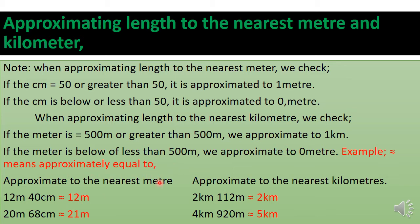Example — approximate to the nearest meter: 12 meters 40 centimeters. Is 40 centimeters up to 50? No, so it's zero meters. 12 plus zero gives us 12 meters. Next: 20 meters 68 centimeters. Is 68 up to or more than 50? Yes, so we approximate to one meter. 20 plus 1 gives us 21 meters.